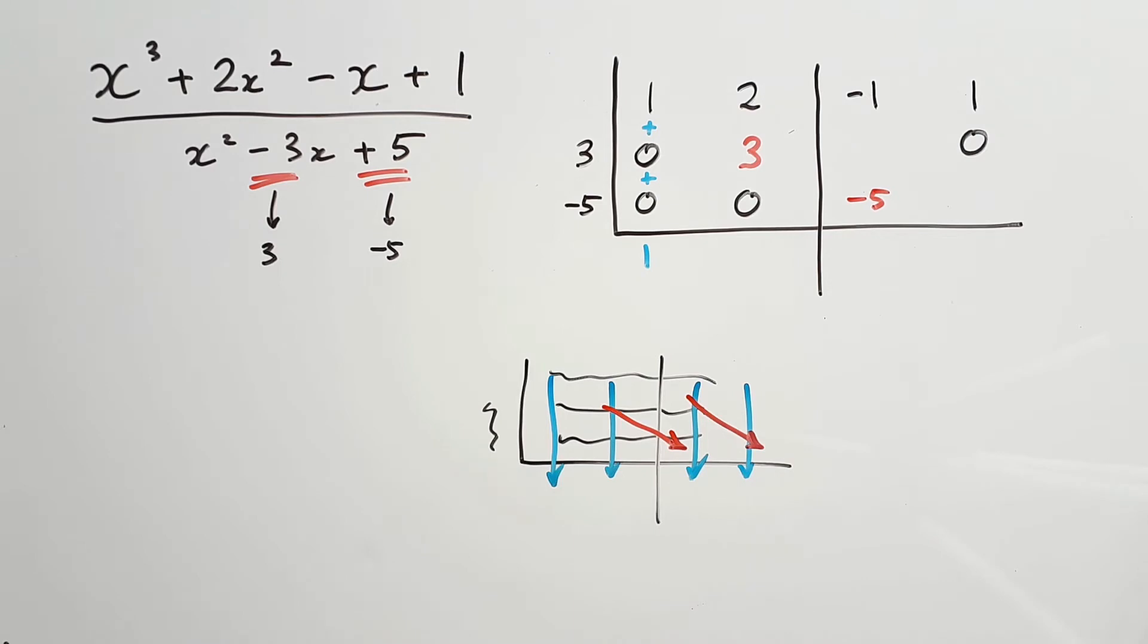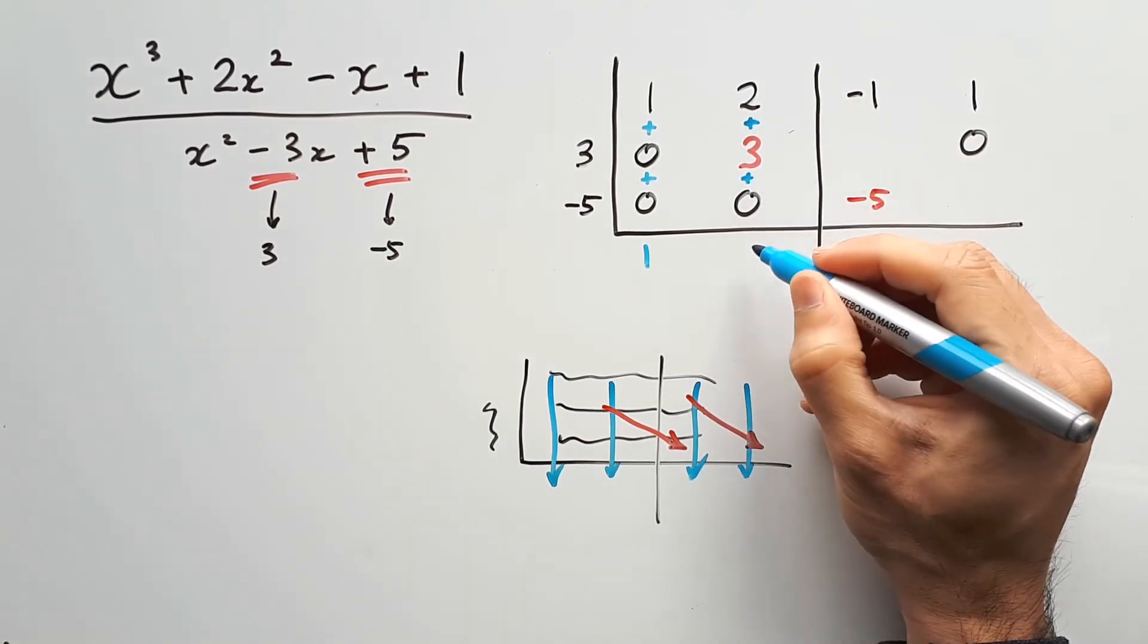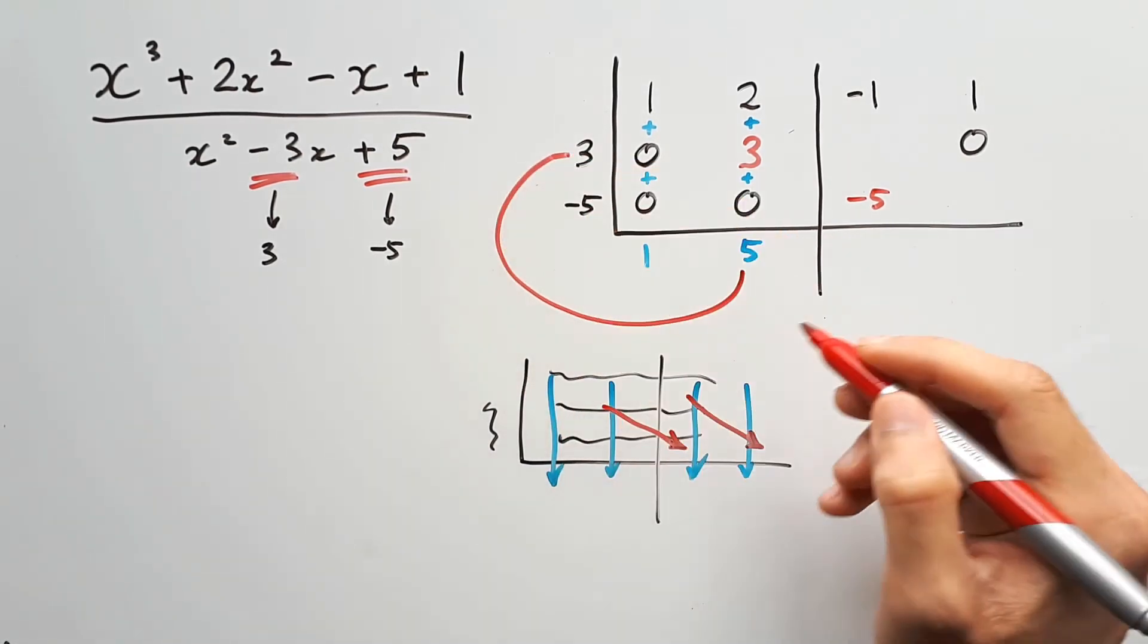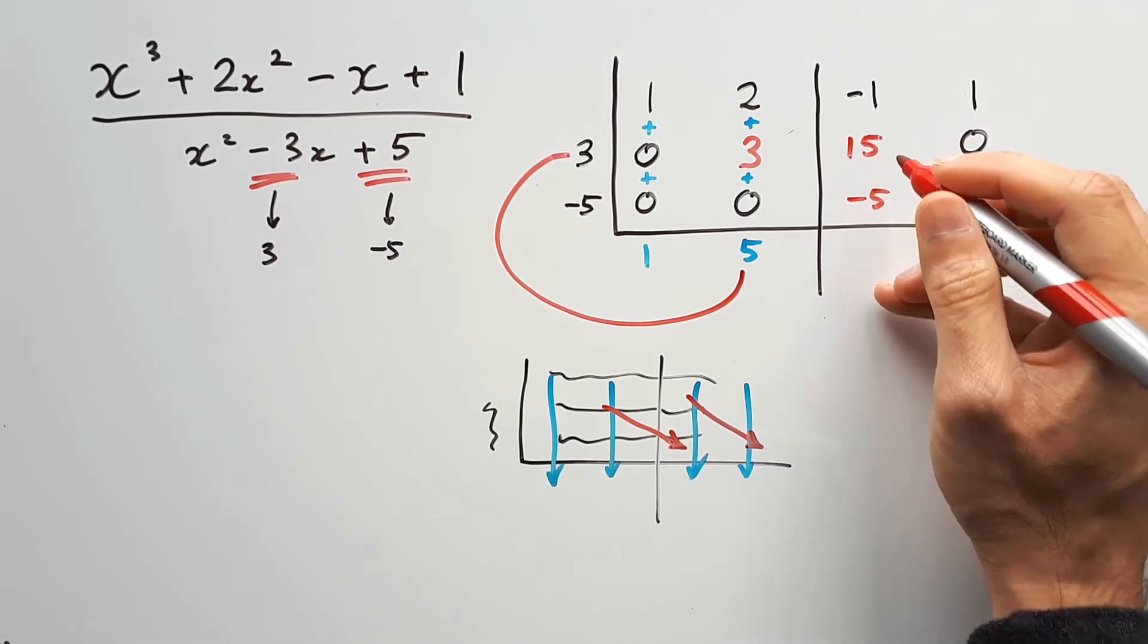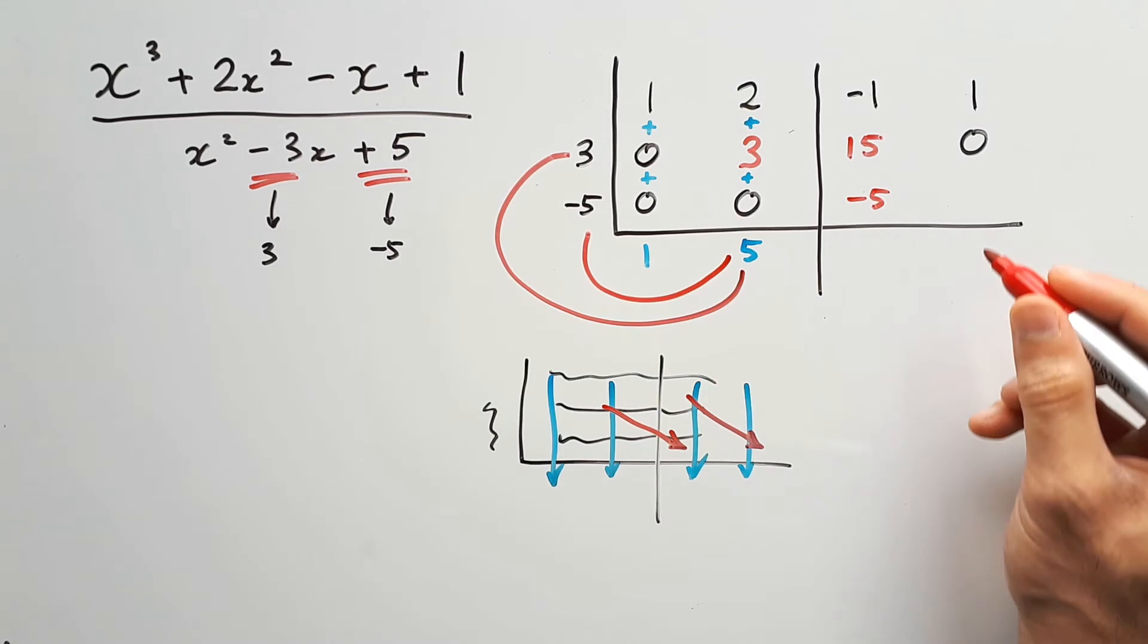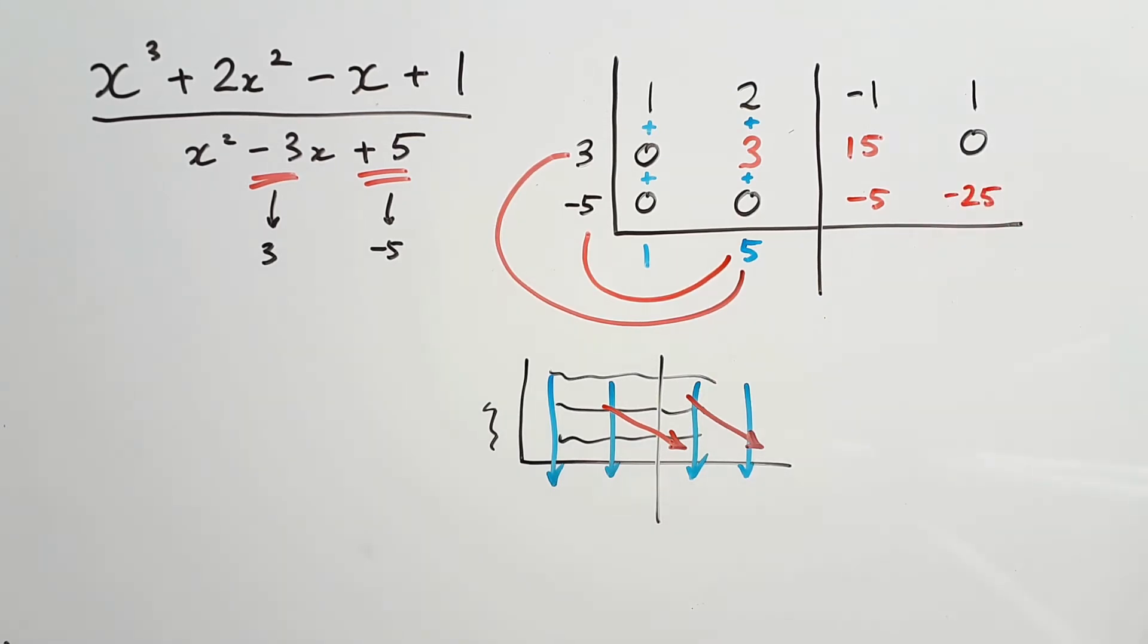So repeating this for the next set of numbers, you just take 2 and add 3 plus 0, giving you 5, then take 5 times by 3 outside, write the product of 15 in the next empty spot on that row, and then take the same 5, multiply negative 5, giving us negative 25 in the last spot.